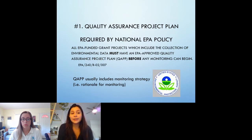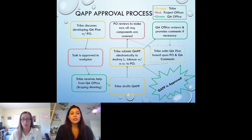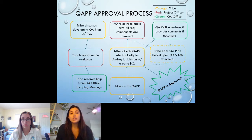The QAAP should contain your monitoring objectives, design, water quality indicators, data management, analysis and assessment, and any procedures and protocols for reporting that you have in place. This chart outlines the approval process for either creating a new QAAP or making any revisions. A tribe will receive assistance from the QA office, typically in a scoping meeting, to help develop their QAAP. After it is drafted and submitted, it will be reviewed and sent back and forth with necessary comments from your project officer or the QA office until it is finally approved. You can find links to QAAP development assistance on our Region 9 Tribal Water Grants website.